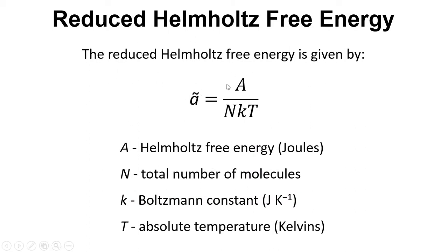To calculate the reduced Helmholtz free energy, we take the Helmholtz free energy from the earlier equation — which was U minus TS — and divide by the total number of molecules, the Boltzmann constant, and the temperature. This gives us the dimensionless reduced Helmholtz free energy.